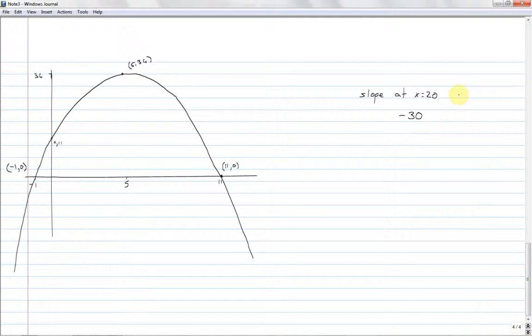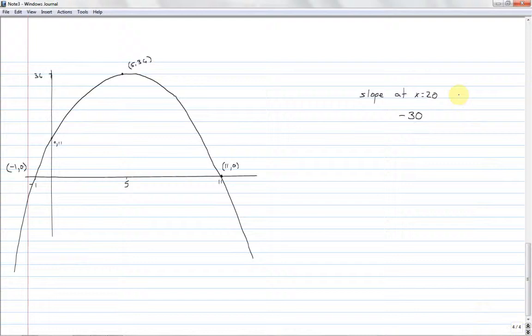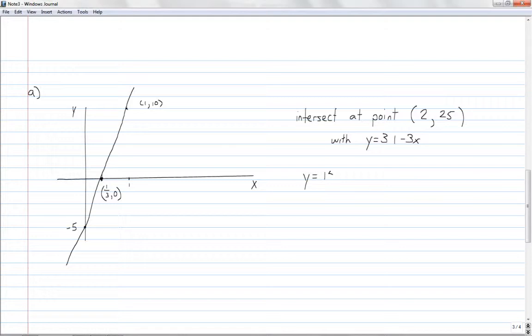For the second part, the answers look like this, the slope at x equals 20 is negative 30, the important points for this one are this negative 1 comma 0, 0 comma 11, 5 comma 36, and 11 comma 0. So if you got those ones, great, see you later, and if not, then you can follow along with me as I show you how to do these.